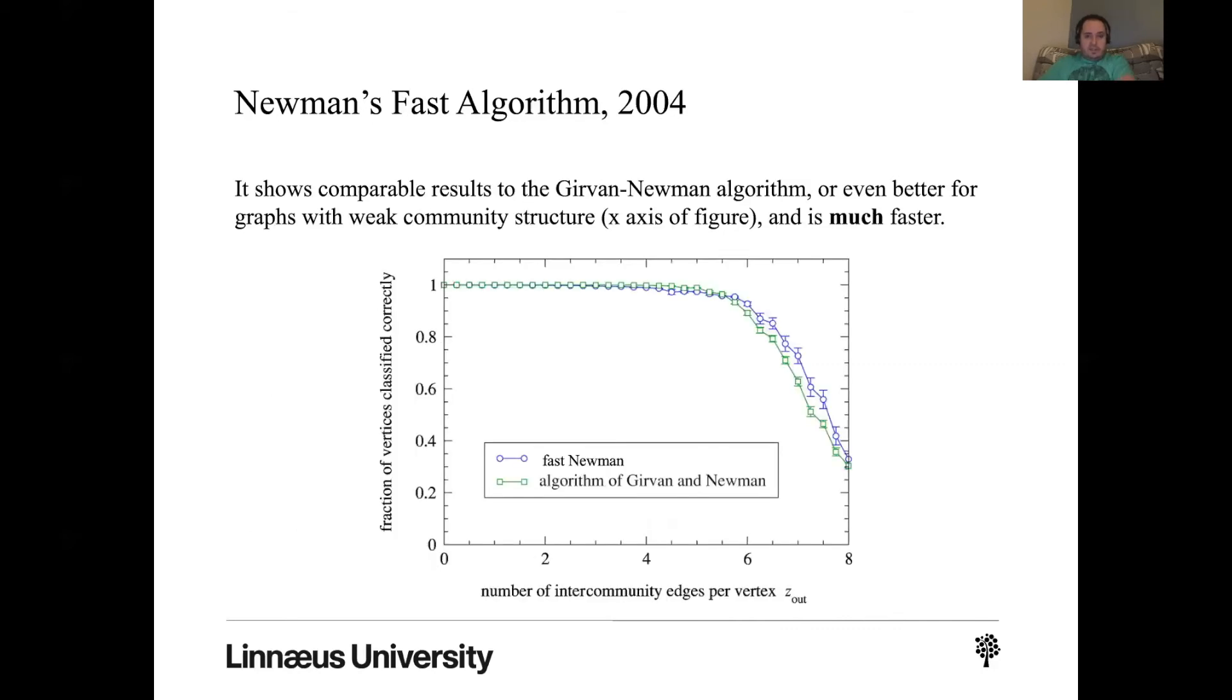This is an example of a comparison between the results of this faster algorithm and the previous one, the Girvan-Newman algorithm, which is much slower but a little bit more accurate. So you can see that here the green squares are the actual slow algorithm and the blue little circles with some little whiskers are the fast new one.